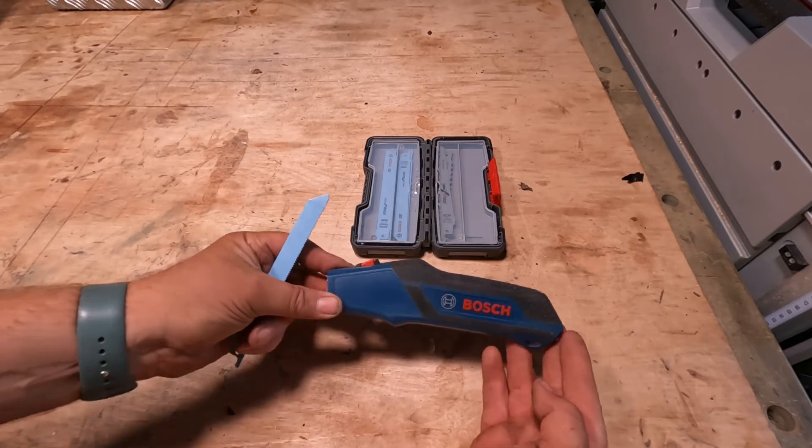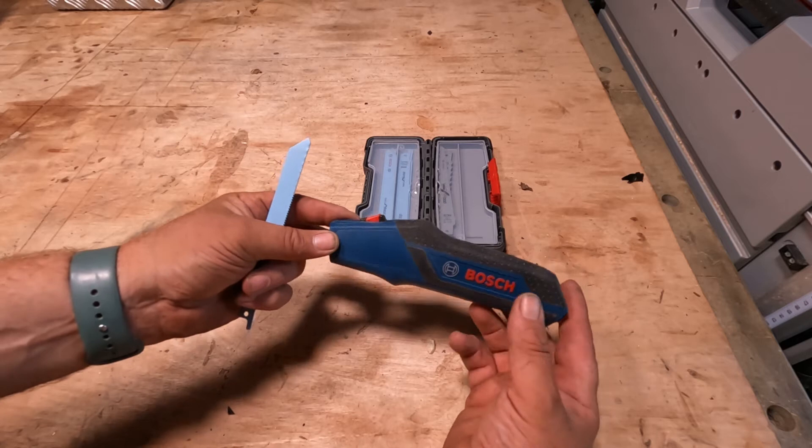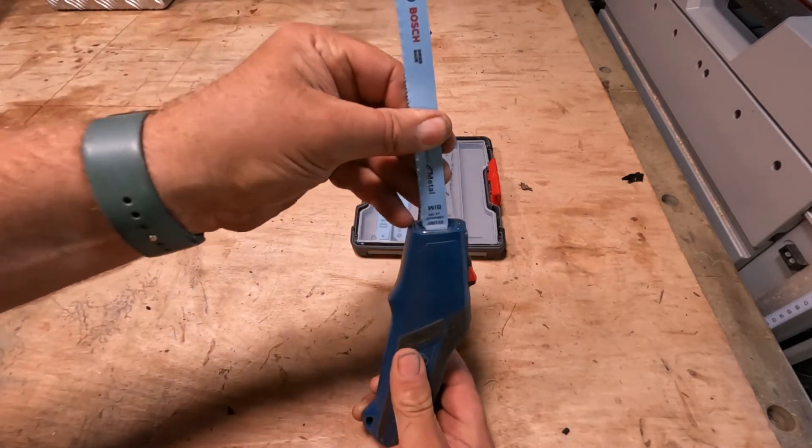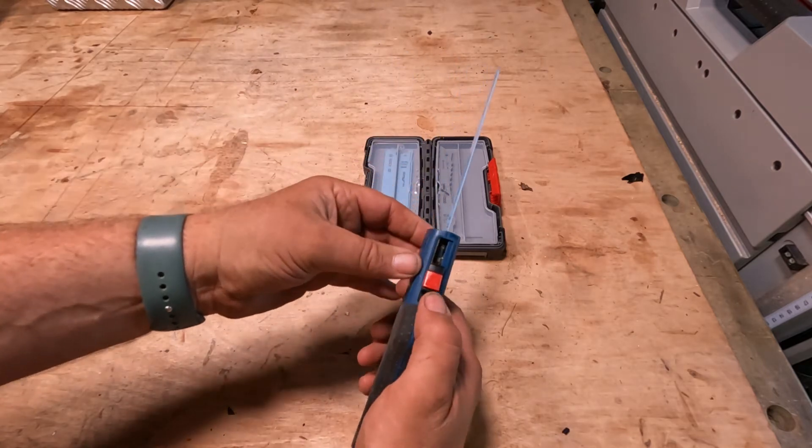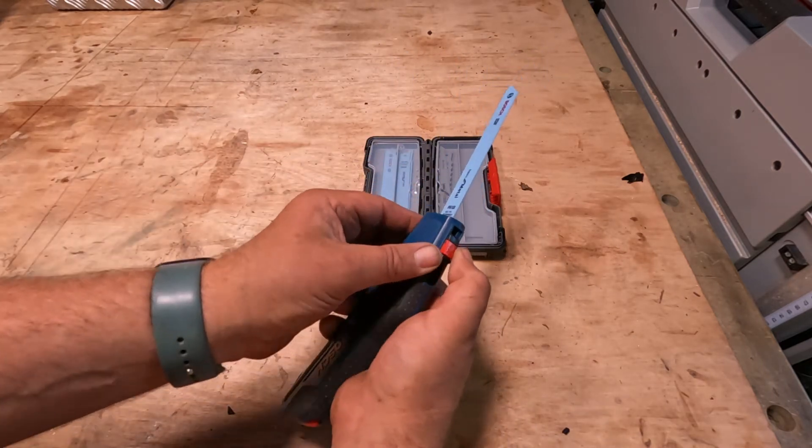In this review we're having a look at the Bosch reciprocating handle. All we have to do is just place the saw blade in the front of it and then push the red lever down at the same time as sliding it forwards.